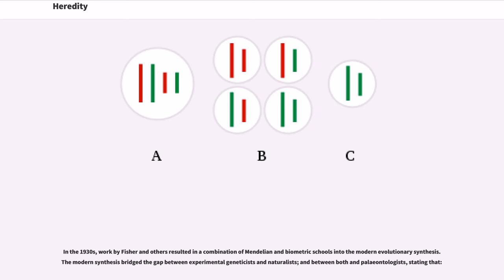In the 1930s, work by Fisher and others resulted in a combination of Mendelian and biometric schools into the modern evolutionary synthesis. The modern synthesis bridged the gap between experimental geneticists and naturalists, and between both and paleontologists.